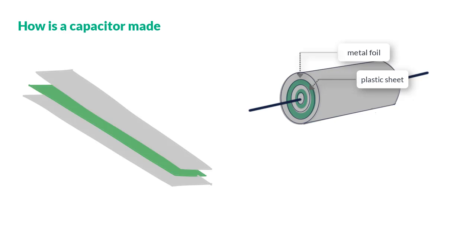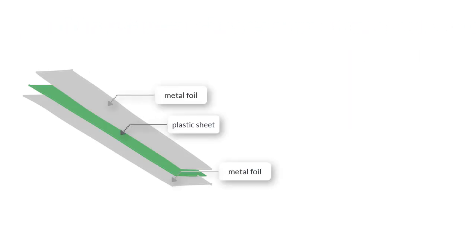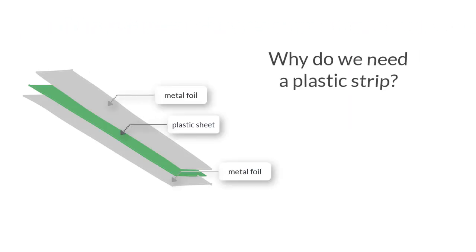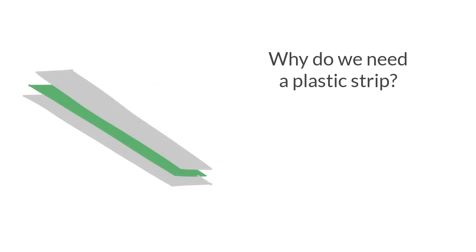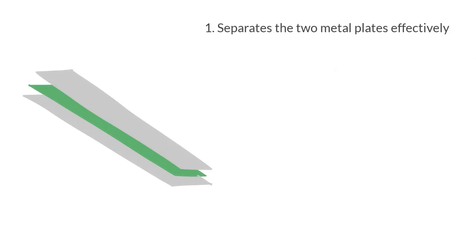The question that should come to your mind is: why do we need to insert a plastic strip — that we call a dielectric — between the two metal foils? There are three benefits of doing this. First, it is impossible to have two metal foils or plates separated by a thin layer of air since they would tend to collapse or come into contact with each other. This plastic layer neatly separates the two metallic plates.